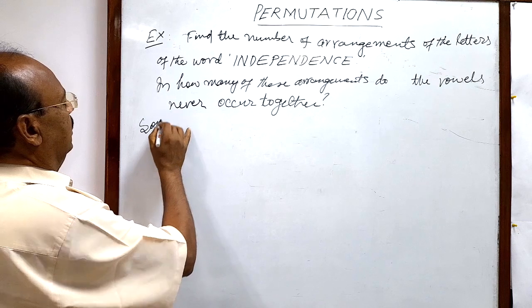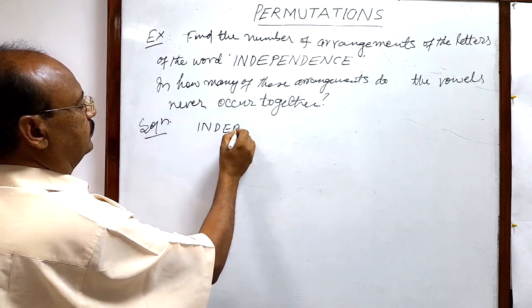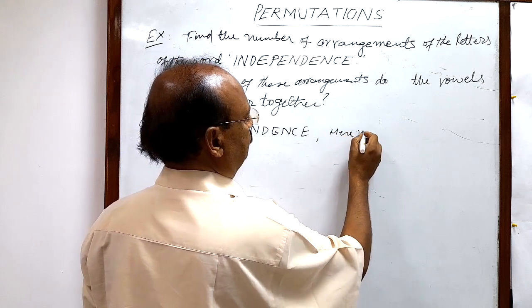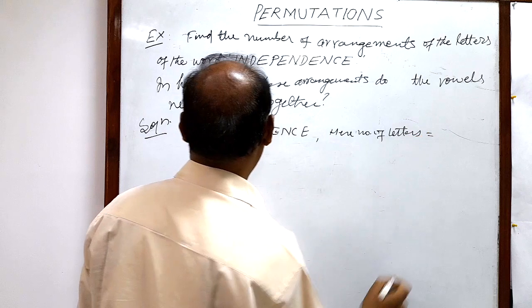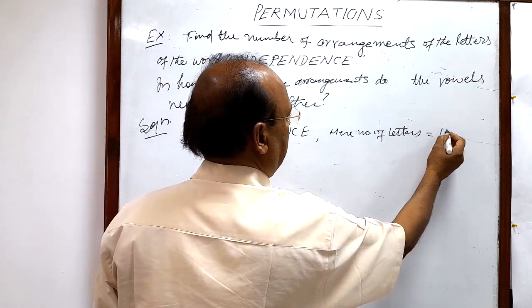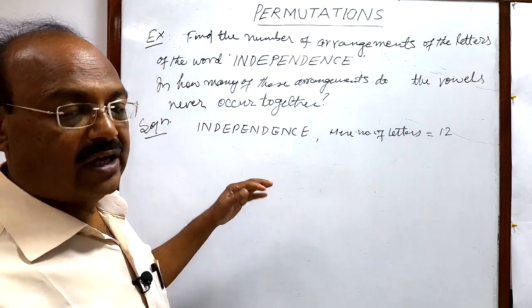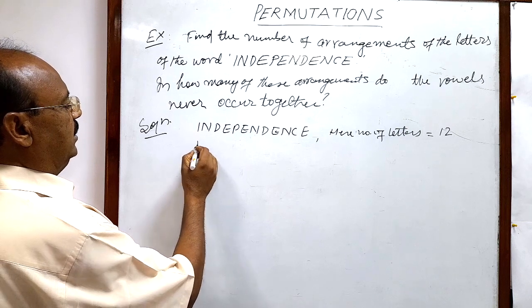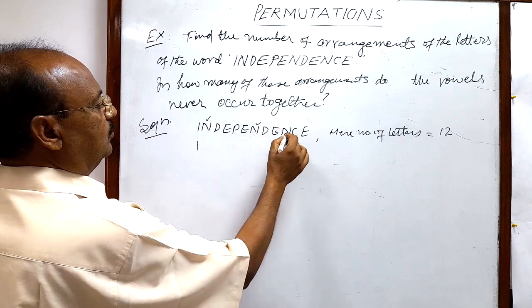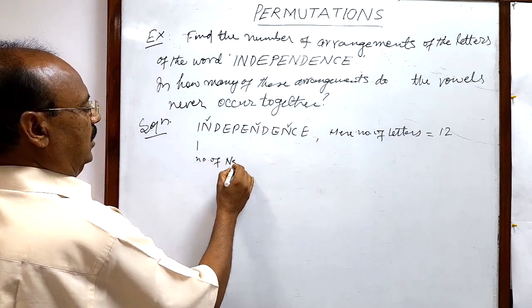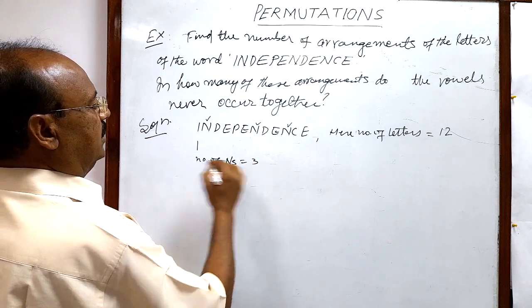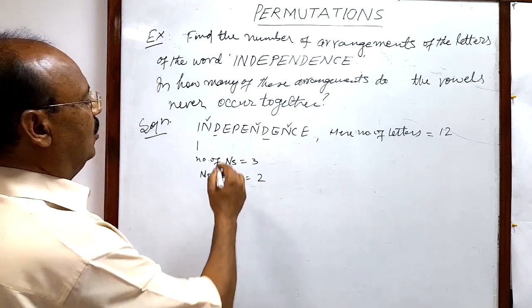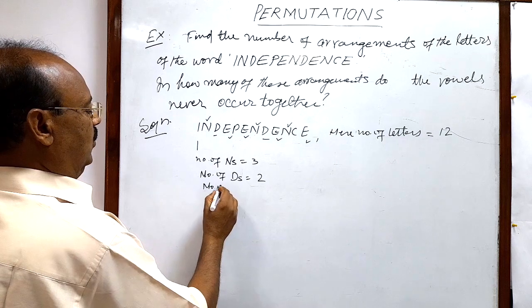The solution will be very interesting. Given word is INDEPENDENCE. Total number of letters — let us count: one, two, three, four, five, six, seven, eight, nine, ten, eleven, twelve — twelve letters. Some of the letters are alike. I is alone, so we have only one I. N appears one, two, three times — so number of N's is three. Number of D's is two.